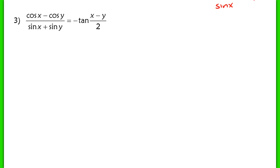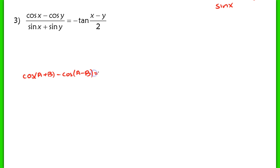In problem 3, I'll work on the left-hand side. In the numerator I see the difference of two cosines. The formula is: cos(a+b) minus cos(a−b) = −2·sin(a)·sin(b). I need to find a and b. Setting x+y = 2a gives a = (x+y)/2, and x−y = 2b gives b = (x−y)/2. So cosine x minus cosine y becomes −2·sin((x+y)/2)·sin((x−y)/2).